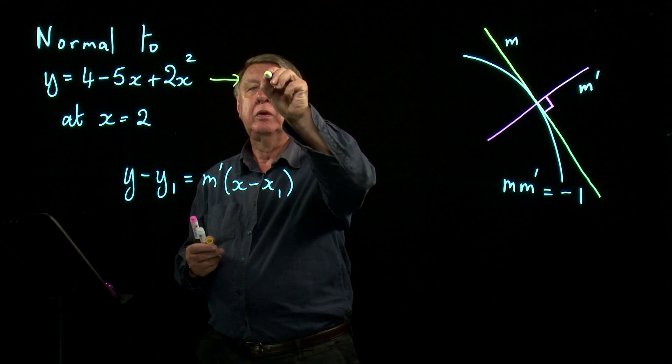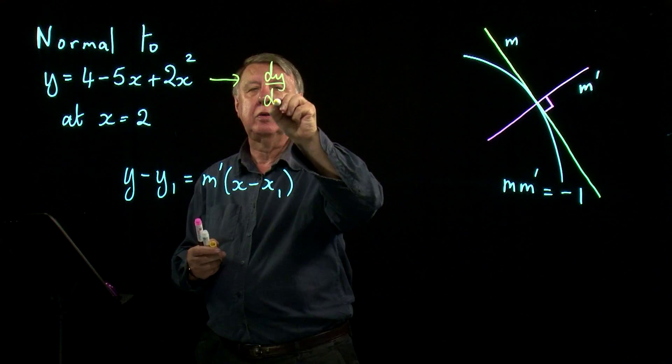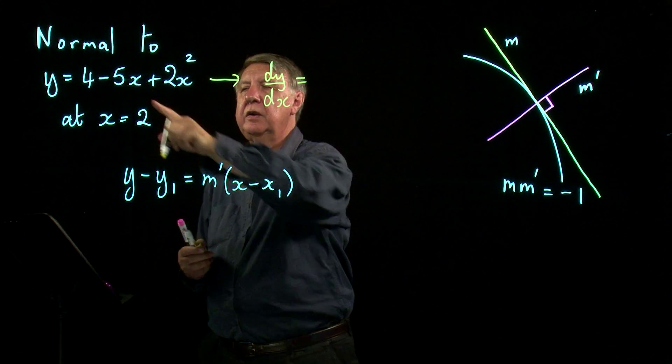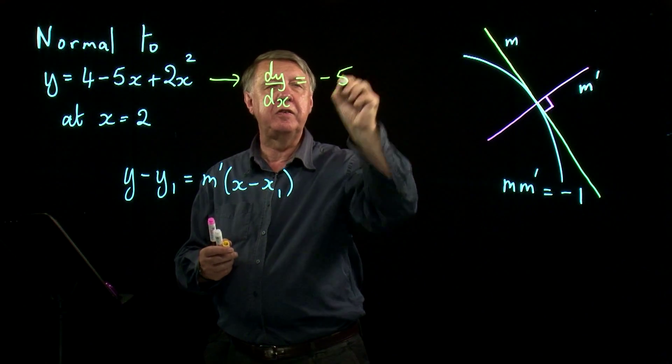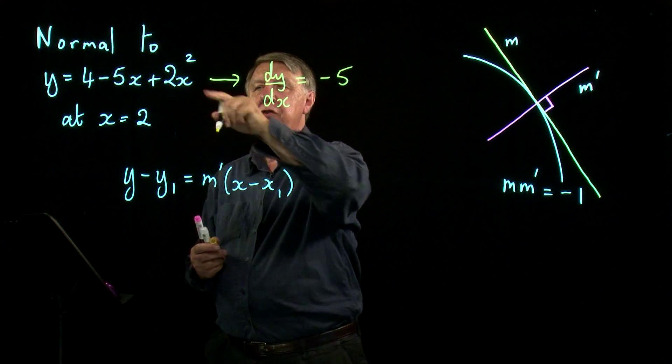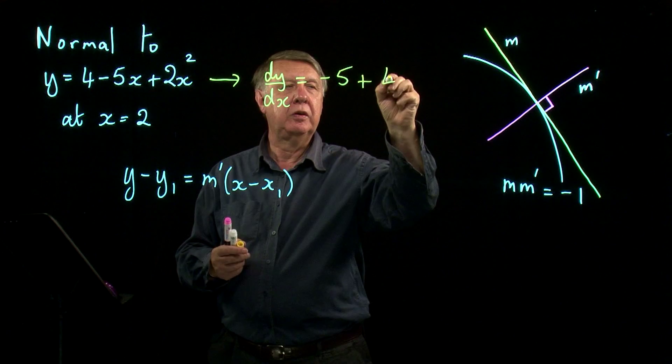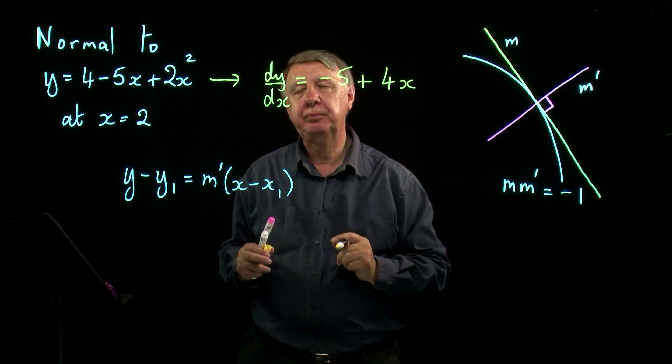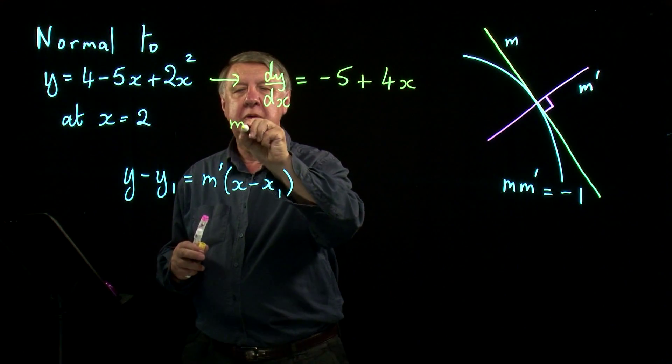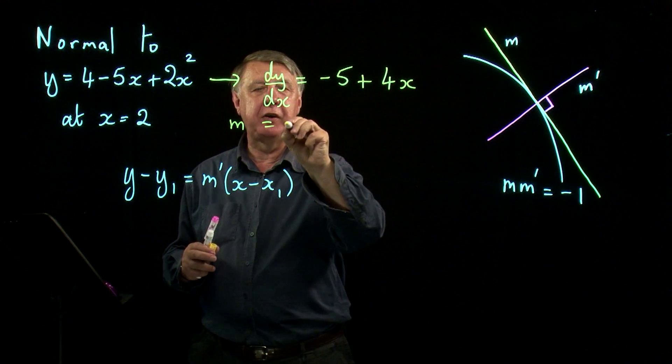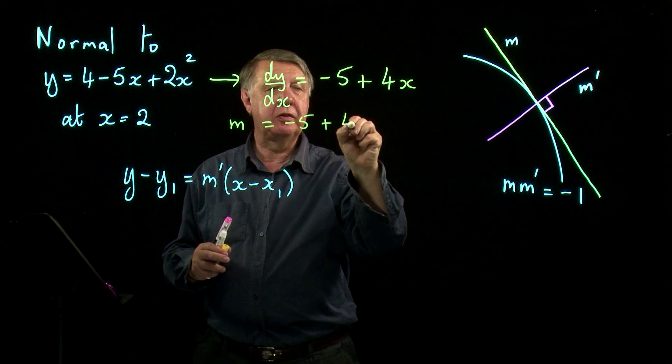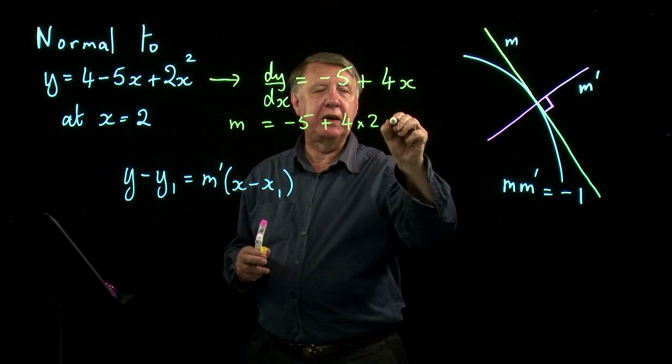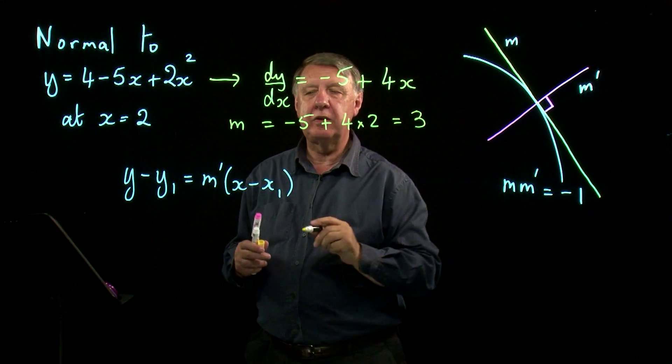dy by dx equals differentiate 4 is nothing, differentiate negative 5x is negative 5, differentiate 2x squared is 4x. Got our x value 2. So m is negative 5 plus 4 times 2 which is 8. Negative 5 plus 8 is 3.